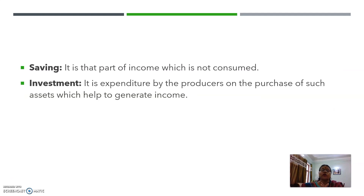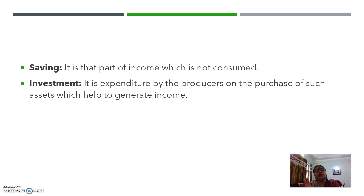जो economy में produced हुआ, उसमें से consumers ने अपनी wants को directly satisfy करने के लिए consume किया। लेकिन जो consume नहीं किया, that part is saving. Saving is that part of income which is not consumed — or you can say excess of production over consumption, that is saving.